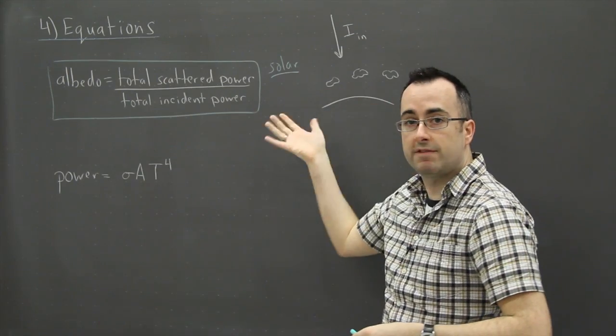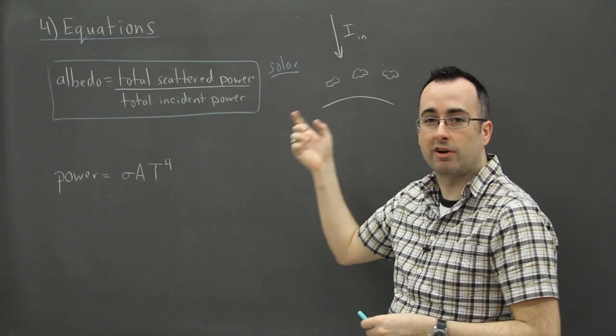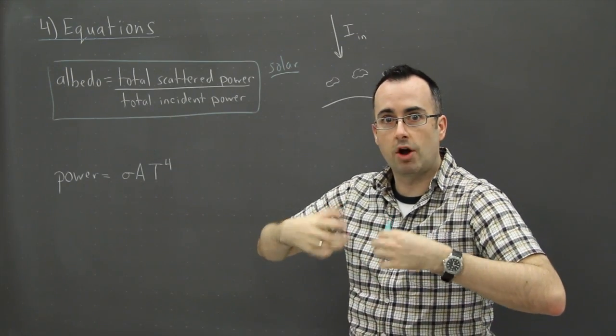Now what happens is we've got lots of different processes on the Earth. We've got clouds that absorb some of that. We've got some of the surface that absorb it. If things are dark, for example, they absorb it and get hotter.